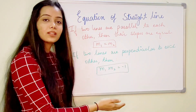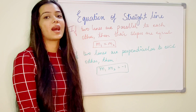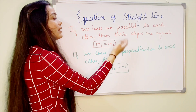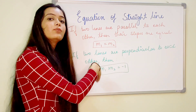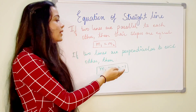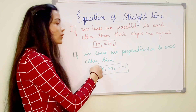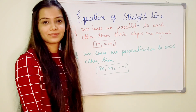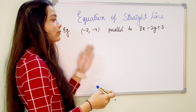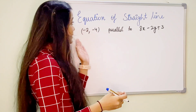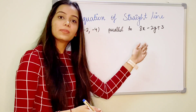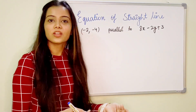If two lines are parallel to each other, their slopes are equal. So if line L1 has slope m1 and line L2 has slope m2, then m1 equals m2. But if two lines are perpendicular to each other, the product of their slopes equals minus 1. Now suppose we have to find the equation of a line passing through the point (-2, -4) and parallel to the line 8x minus 2y plus 3 equals 0.